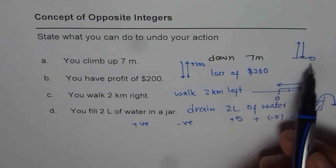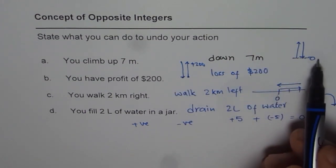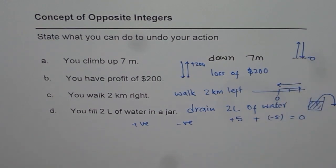So opposite integers are integers which have the same value but opposite sign. When they add up, they always add up to 0. So that is what we understand from these examples. I hope you appreciate it. Thank you.